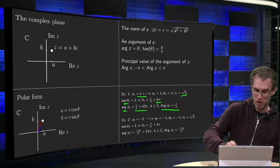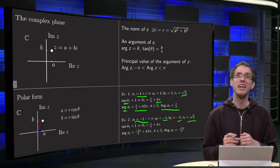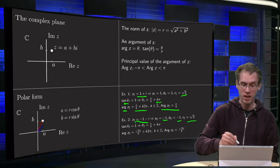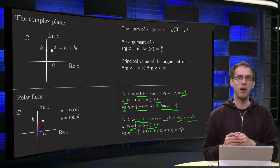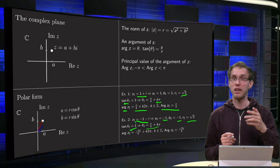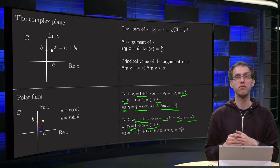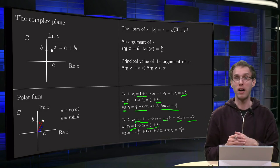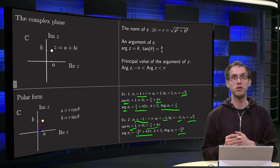You will see the problem with z2 = minus 1 minus i. Here A2 = minus 1 and B2 = minus 1, so the norm is the same as before: square root of 2. The equation for tangent of theta2 is also the same — tangent of theta2 equals minus 1 over minus 1, which equals 1 again. So the solution is again pi over 4 plus k times pi. If you plug this blindly into your calculator you only find pi over 4, which gives the incorrect argument. You need to add a multiple of pi, giving either pi over 4 or minus 3pi over 4 up to a factor of 2pi. Since minus 1 minus i is in the third quadrant, theta equals minus 3pi over 4. So the small argument equals minus 3pi over 4 plus any multiple of 2pi, and the principal Argument equals minus 3pi over 4.